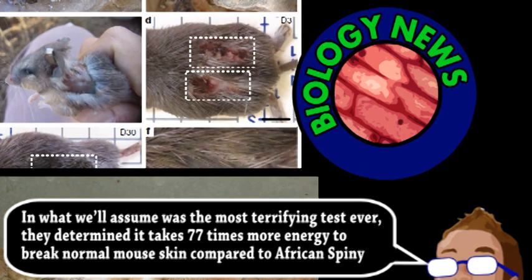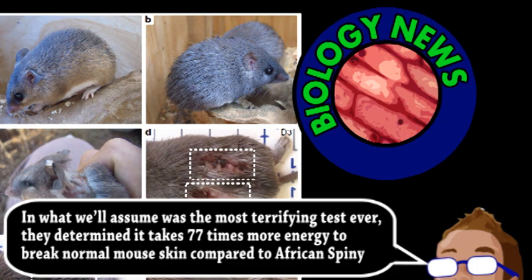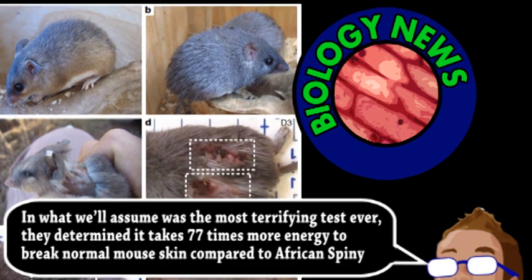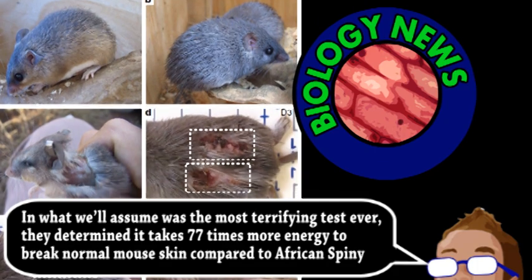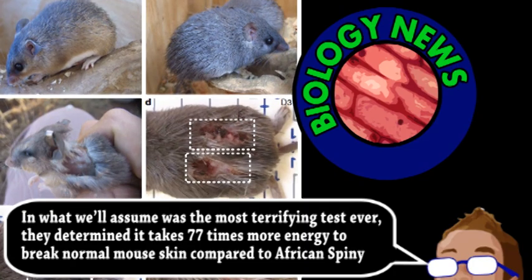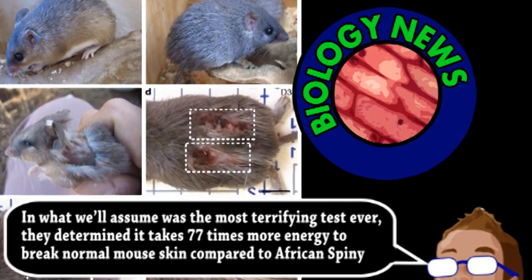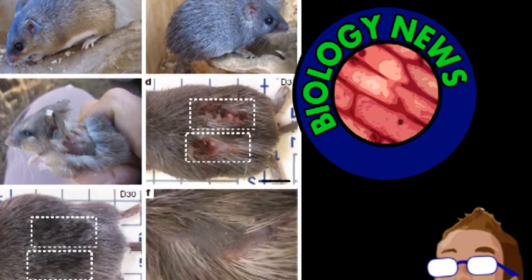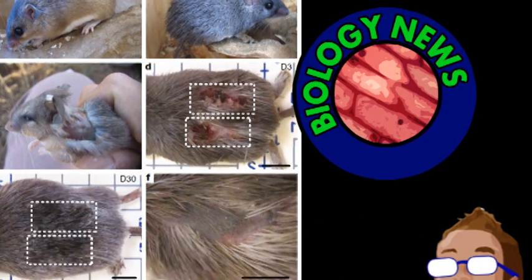To test this, the scientists made small cuts and made 4mm holes in the ears of the mice. Both healed quickly and completely, with minimal scar tissue. Although no muscle was regrown, a variety of cell types, like skin, fat, and hair, formed normal tissue to repair damage.